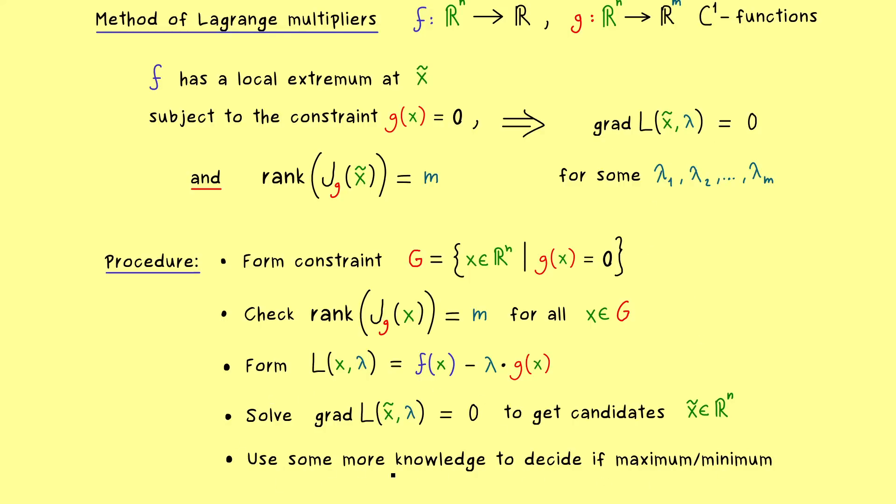However, in simple applications this is not needed, because you have enough knowledge about the function f to decide if you have a maximum or a minimum at a given point. One possible reasoning of this kind you have seen in part 30 of this series. Therefore, I would say this is good enough. This is the method of Lagrange multipliers with the necessary condition in mind.